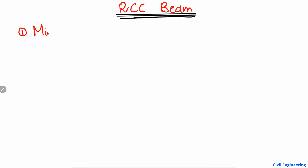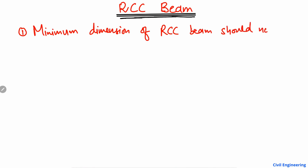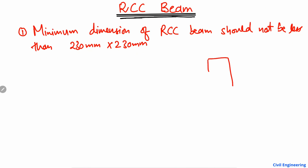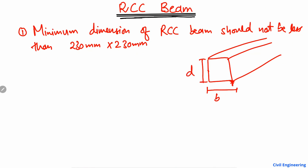The first point is that the minimum dimension of an RCC beam should not be less than 230 mm. Keep in mind, if you want to design an RCC beam, its width and depth should both not be less than 230 millimeters. This is the minimum dimension recommended for the design of a reinforced concrete beam.